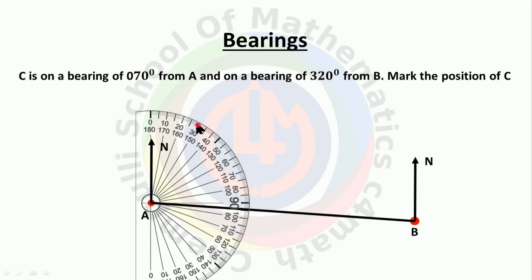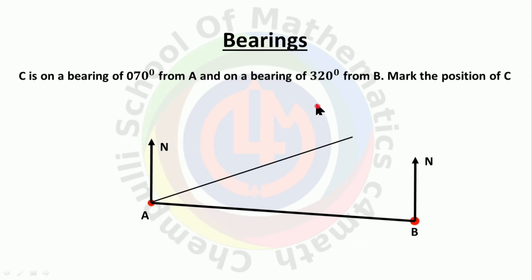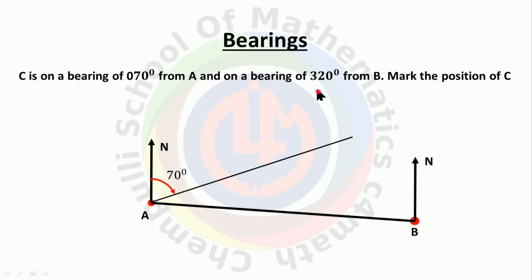Take zero up to 70 degrees and draw a straight line — that is the 70-degree direction from A. Now for the angle at B: the bearing of C from B is 320 degrees. However, on a protractor the maximum is 180 degrees, so 320 degrees cannot be marked directly.